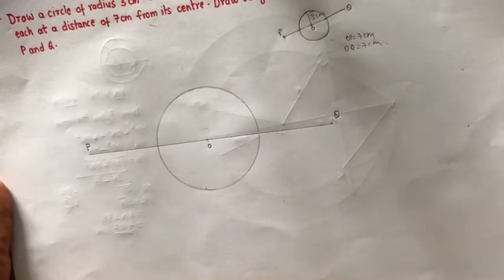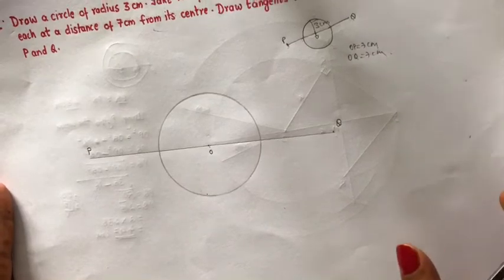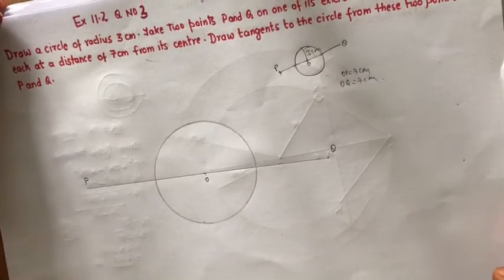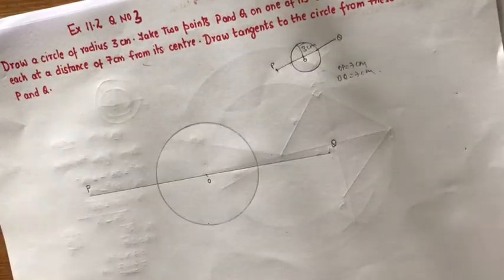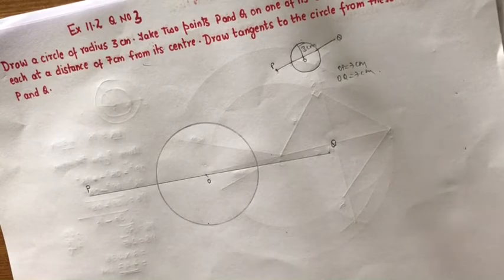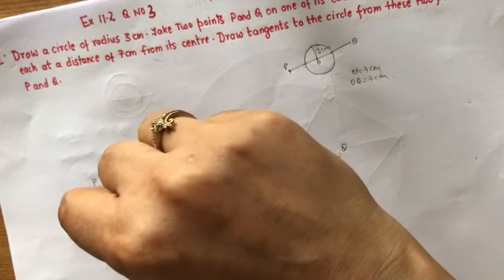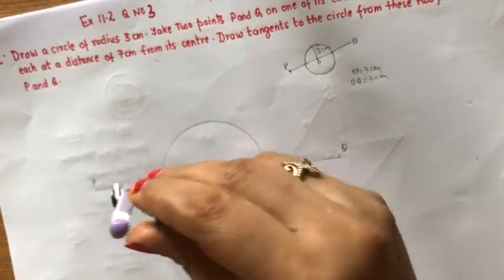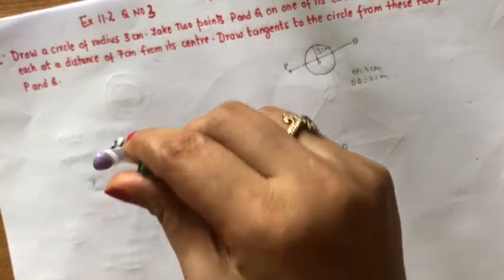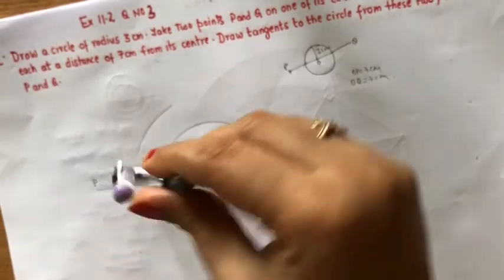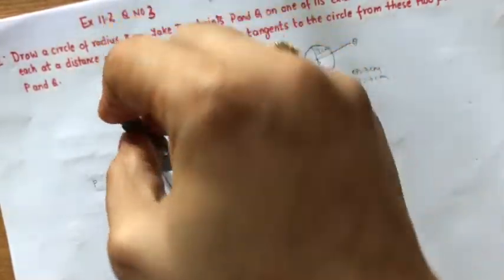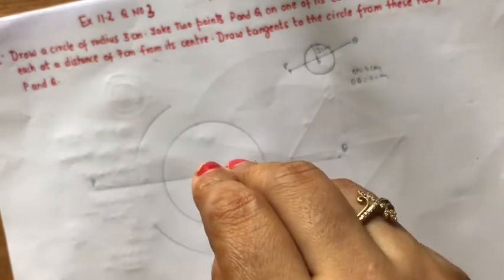From P and Q you have to draw the tangents, correct? So how will you draw the tangents? You know the step now. First step is bisect OP. So how do you bisect OP? OP bisection means tick more than half and simultaneously you can mark this side also, right?